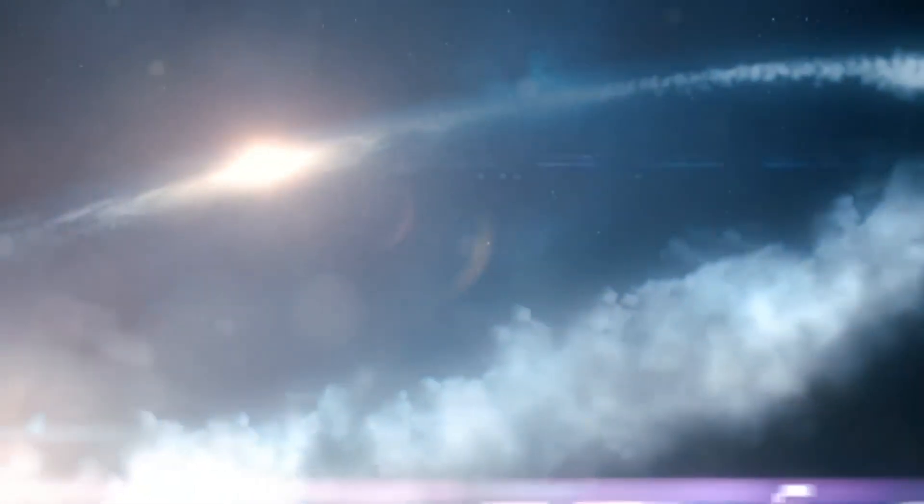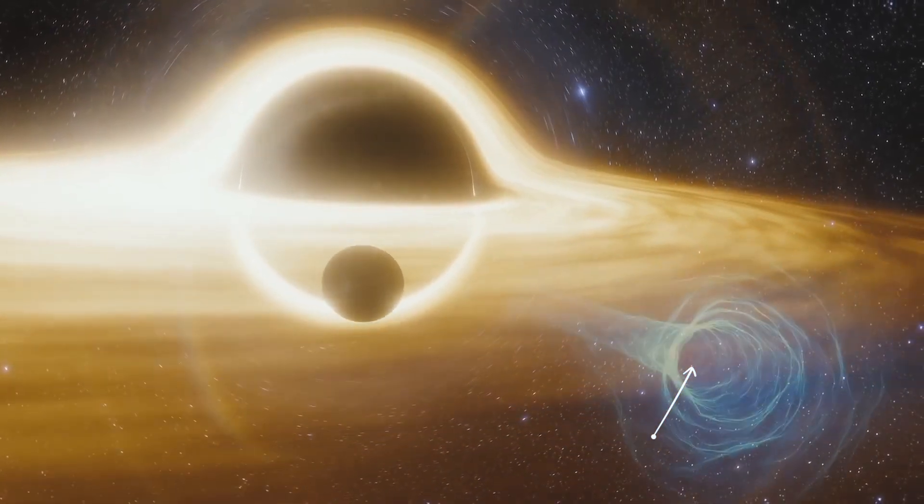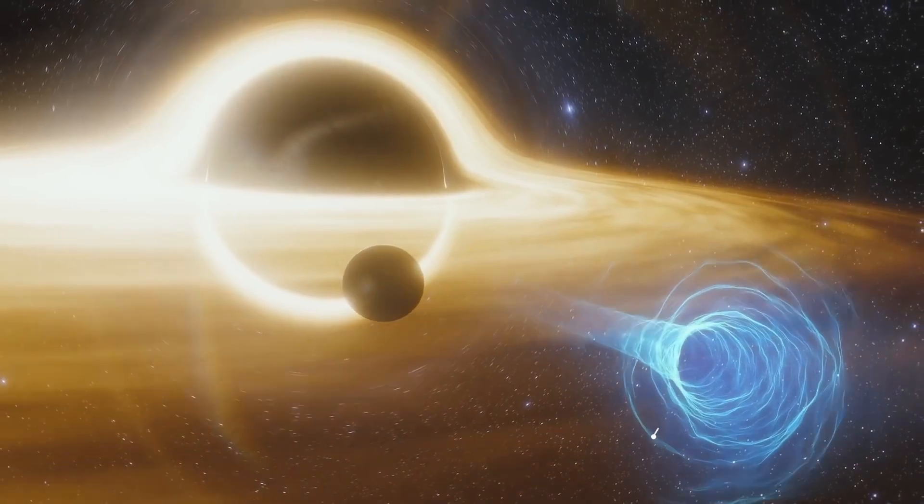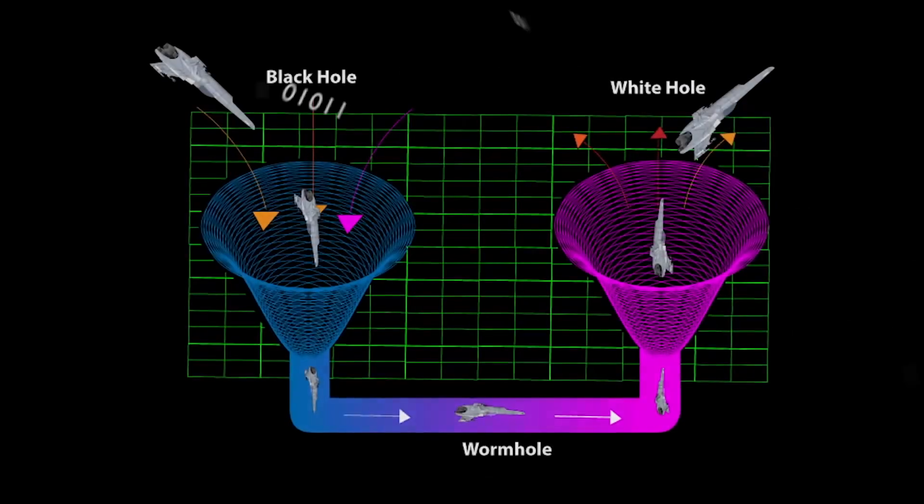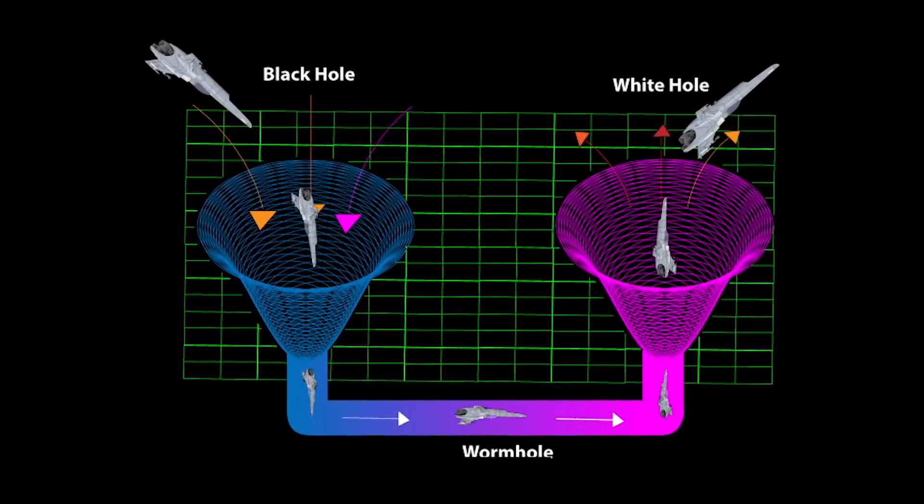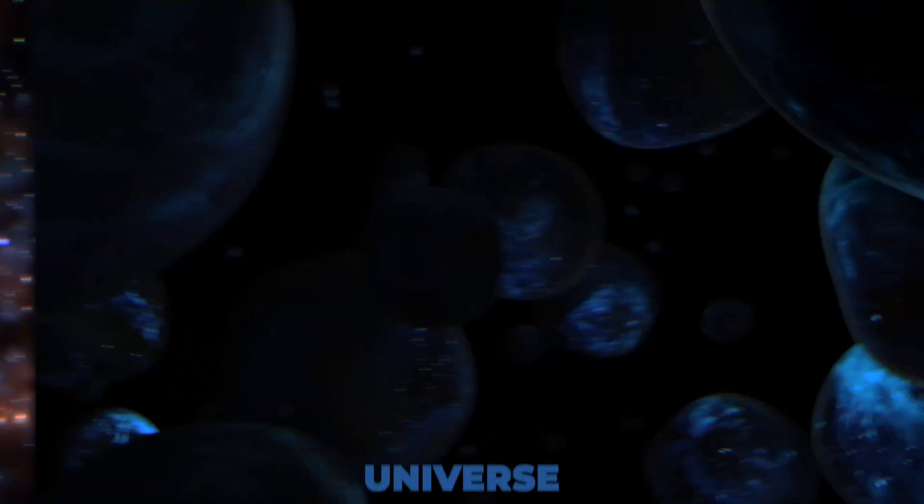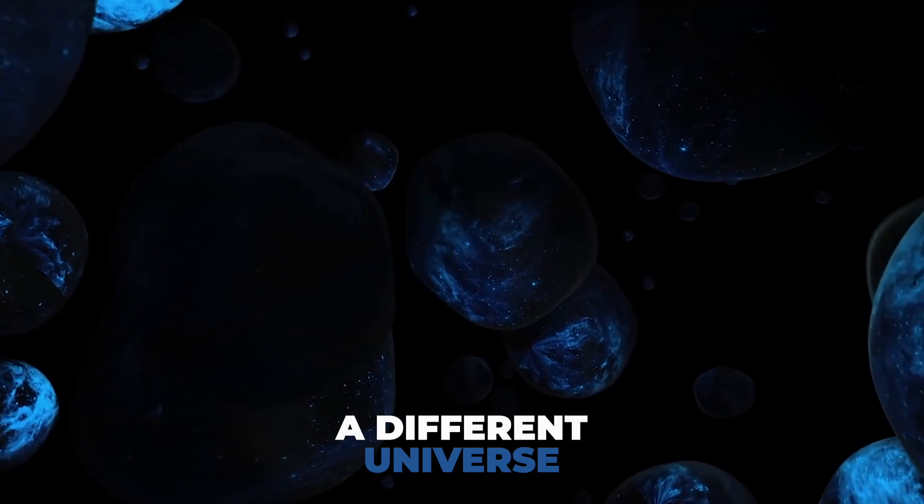One group of scientists are working on a theory that argues white holes are just one side of wormholes connected to a black hole on the other end. This could mean that the matter we detect falling into the black holes in our universe could pop out of a white hole somewhere else in our universe, or perhaps a different universe entirely.